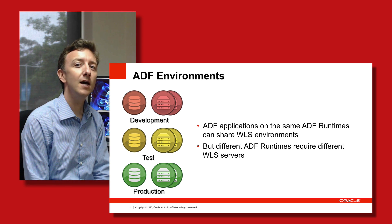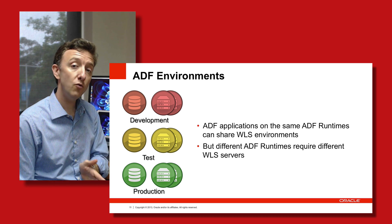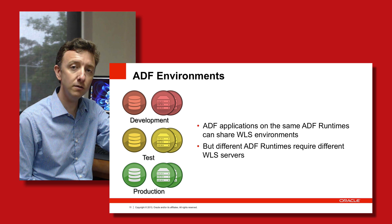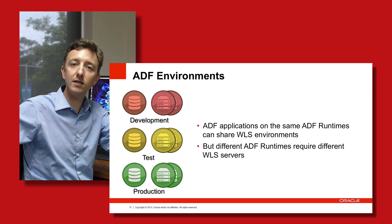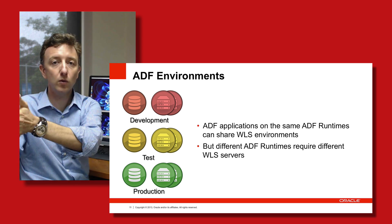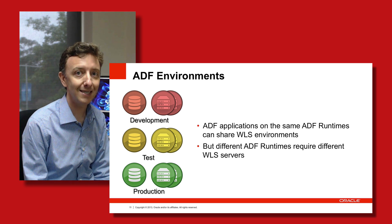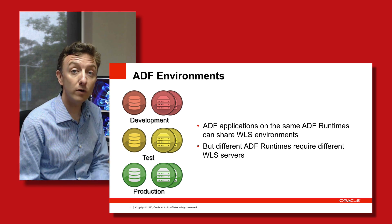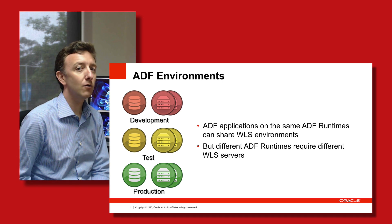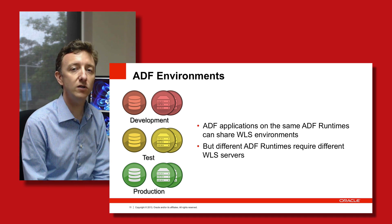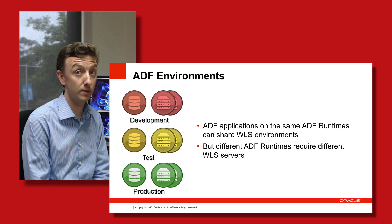This pushes you toward thinking about keeping all your different applications on the same version. For example, if you have an 11.1.1.6.0 application in production and then an 11.1.1.9.0 application in development, by the time that second application hits production you really should have pushed the 11.1.1.6.0 version up to 11.1.1.9.0, so you don't have to deploy more WebLogic servers. But to do that, you'll need to have regression testing in place. The big problem is too many sites try to do regression testing manually, so you need to think about automated regression testing. You can quickly end up in a mess of WebLogic server environments trying to track all the different versions across different applications.